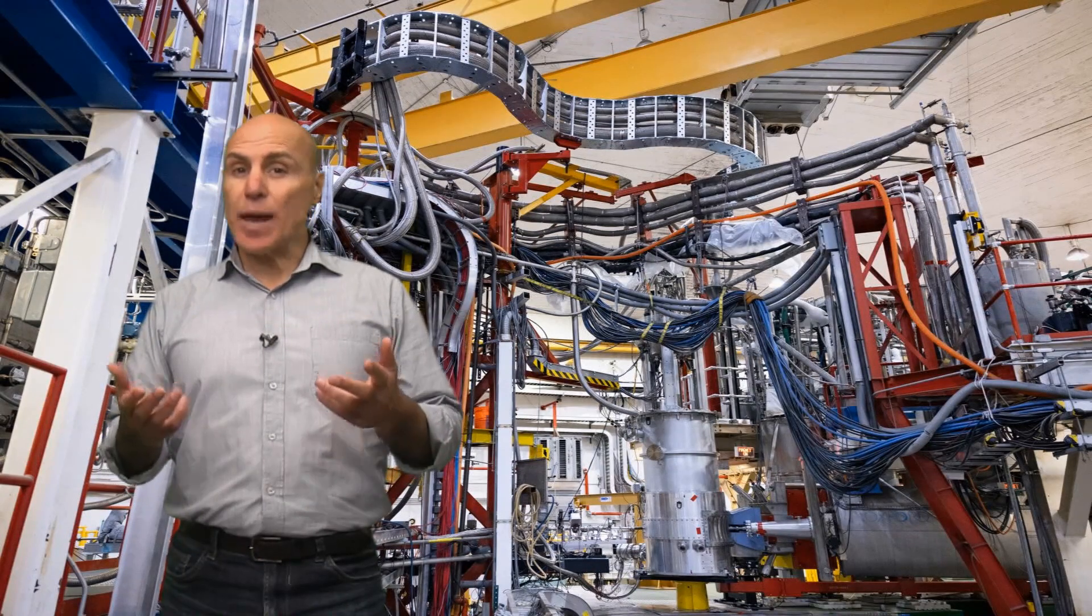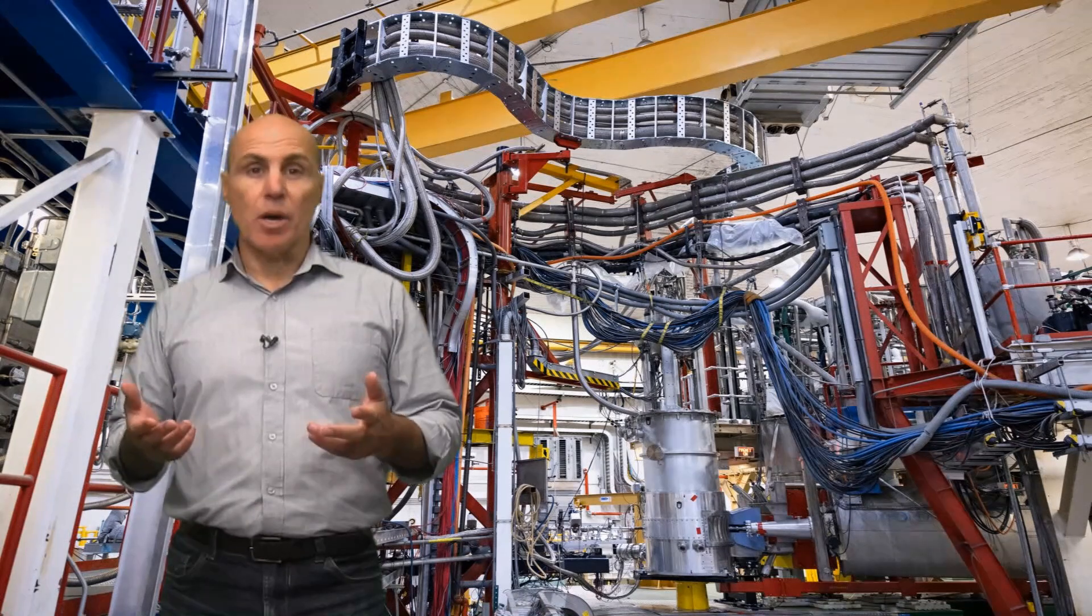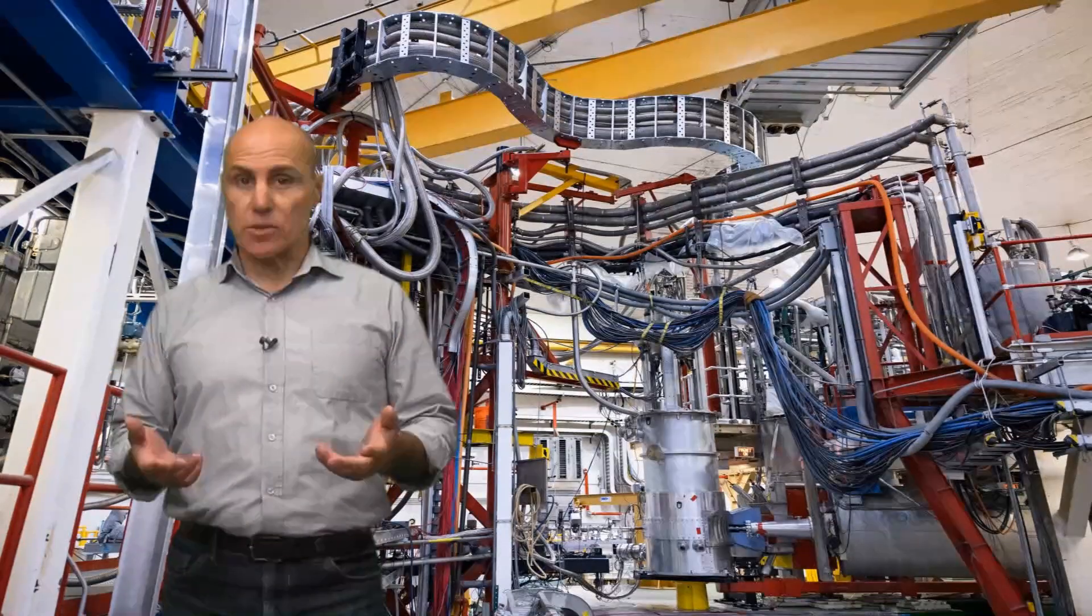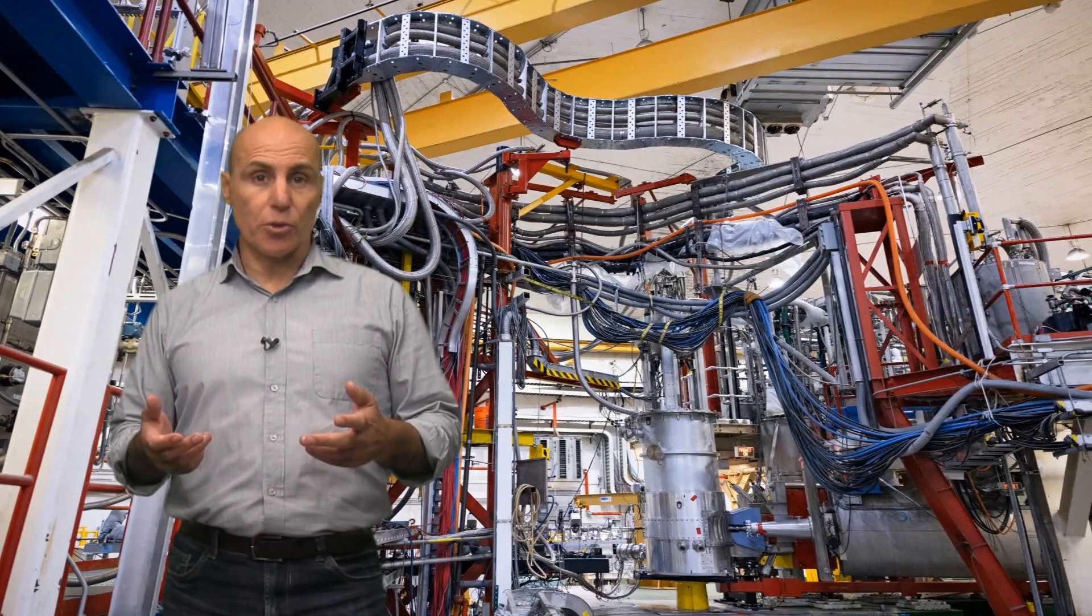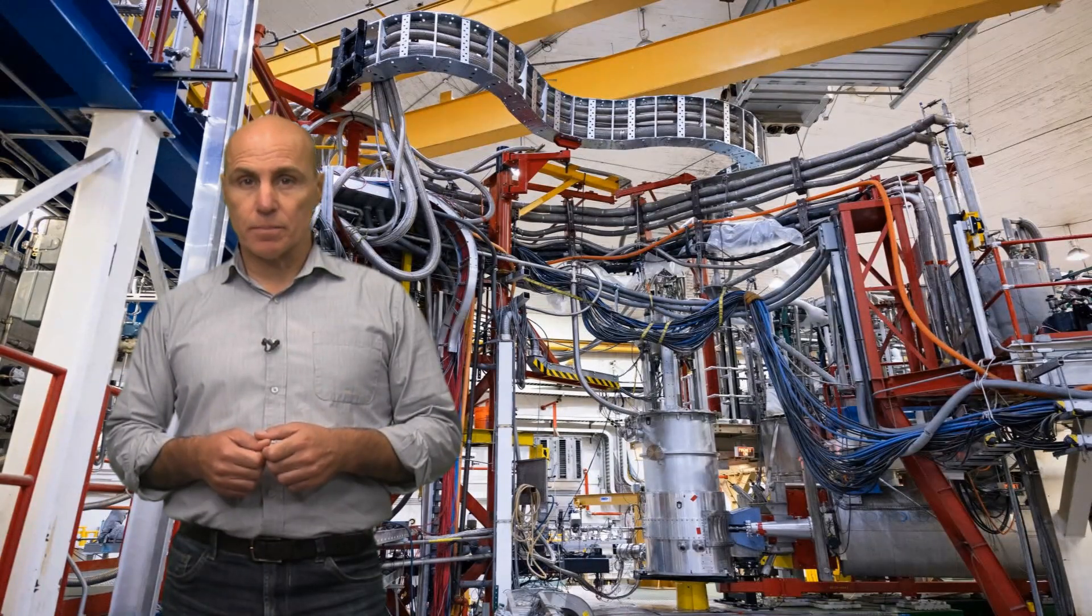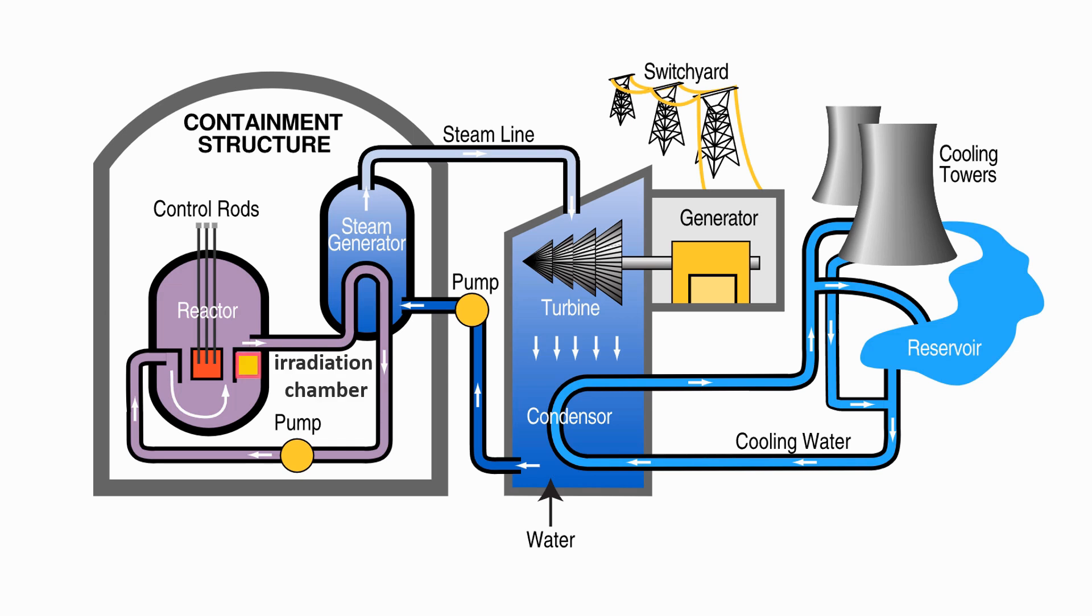Nuclear reactors are often built with irradiation chambers inside them to allow for the production of synthetic radioisotopes using the free neutrons that are released when U-235 atoms undergo fission. The irradiation chambers are designed to be irradiated by large numbers of neutrons coming from the reactor core where the U-235 is.